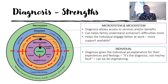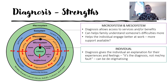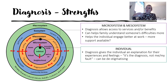At the microsystem and mesosystem level, diagnosis can allow access to services and benefits — opening doors for people. It can help families understand someone's difficulties: if a child is diagnosed with ADHD it might make sense that they're not just being naughty but genuinely struggle to sit still and focus. Diagnosis can also help individuals engage better at work by sharing it with an employer to request reasonable adjustments. Ultimately, diagnosis gives everyone a shared understanding of what's going on — as long as that understanding is correct.